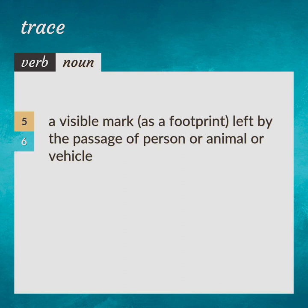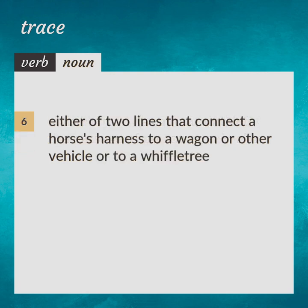A visible mark, as a footprint, left by the passage of a person, animal, or vehicle. Either of two lines that connect a horse's harness to a wagon or other vehicle or to a whiffletree.